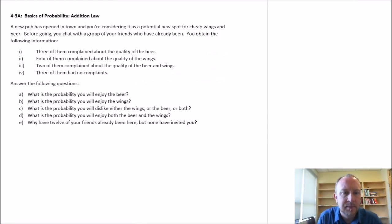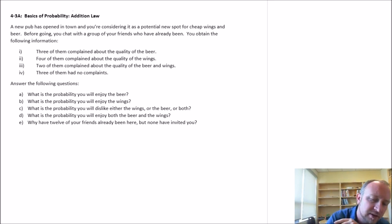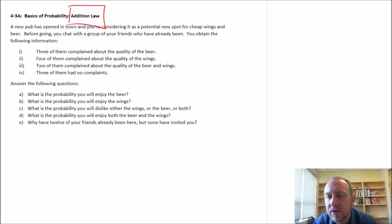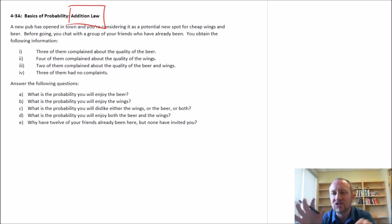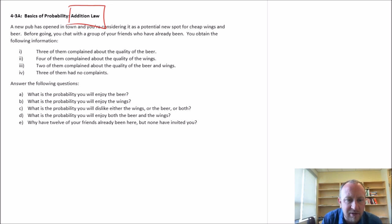Hello, welcome back. Here we're going to start getting into some exercises on relationships of probability. Specifically, we're going to look at the addition rule — how can we add together the probabilities of events occurring? I'm going to go about this in two parallel ways to hopefully help illustrate how this works and why it works the way it does.